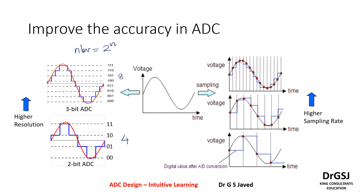So what are the ways of improving accuracy? First, go to a higher sampling rate — meaning reduce the delta T step between the two samples. Second, you can reduce the delta V, which allows the delta V to be further reduced. These two approaches improve ADC accuracy.